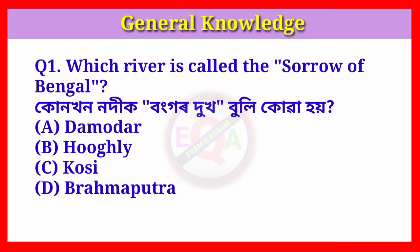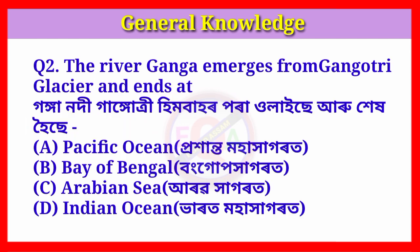Question number one: Which river is called the sorrow of Bengal? Answer: Option A, Damodar. Question number two: The river Ganga emerges from Gangotri glacier and ends at — which location?